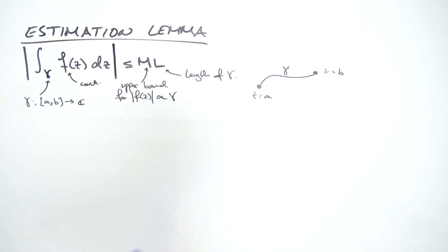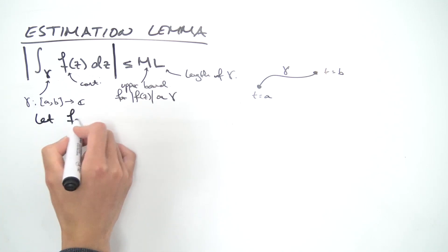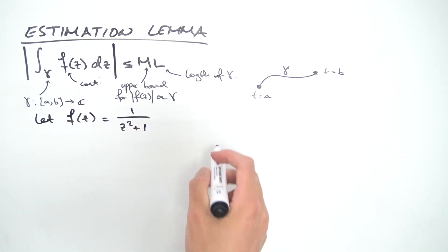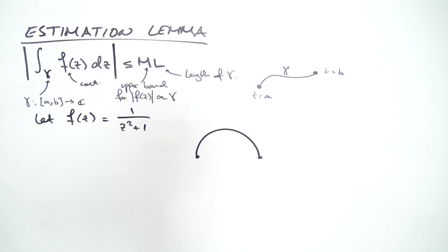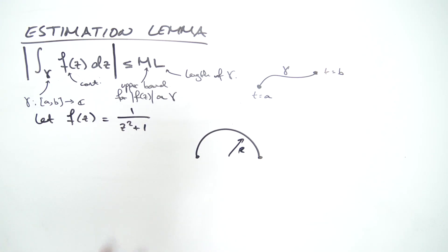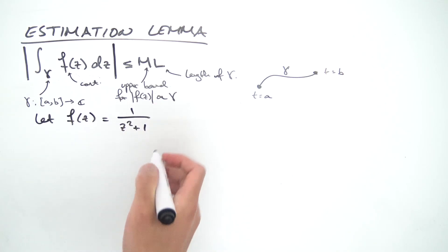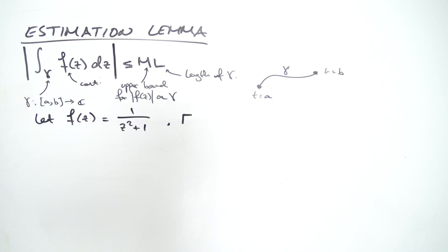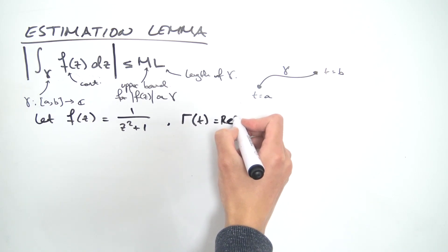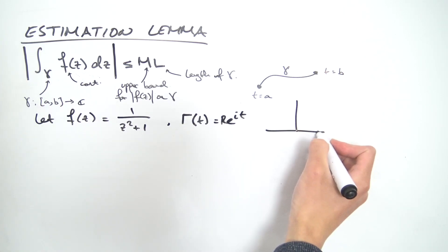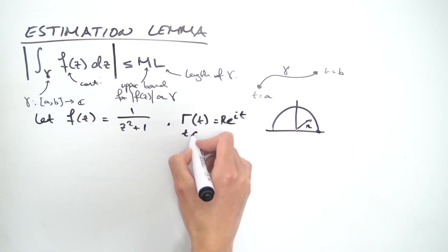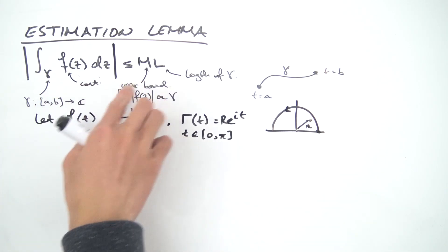Let's look at an example. Let f(z) = 1/(z² + 1). The ML inequality is often used on contour integrals along semicircles to show that as the radius goes to infinity, the integral vanishes. Define the curve Gamma(t) = r·e^(it), where t goes from 0 to pi - this is the semicircle of radius r centered at the origin.